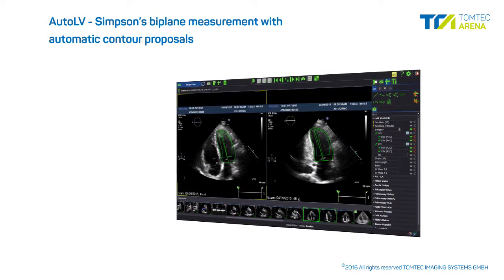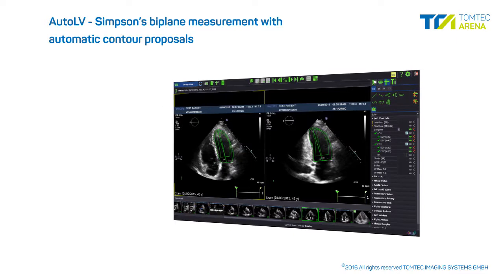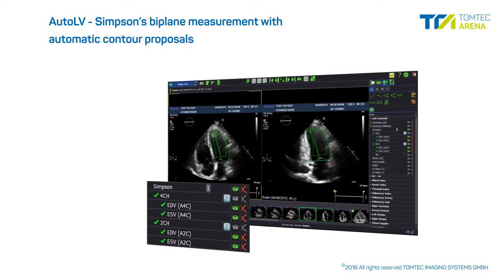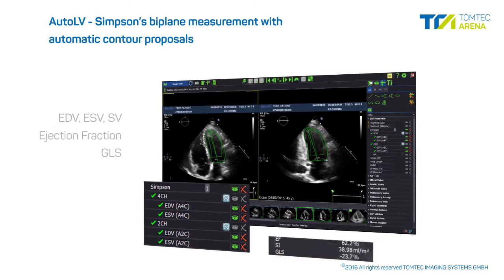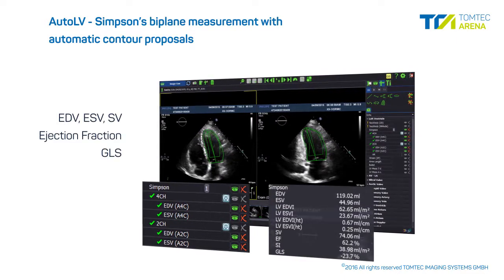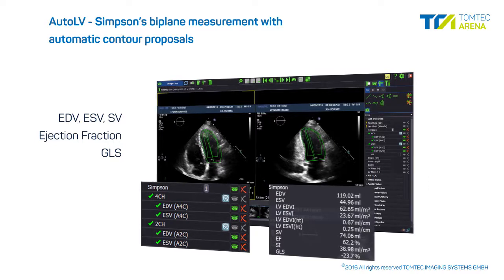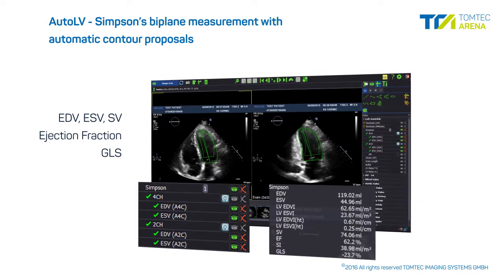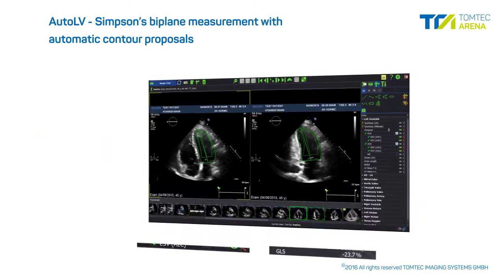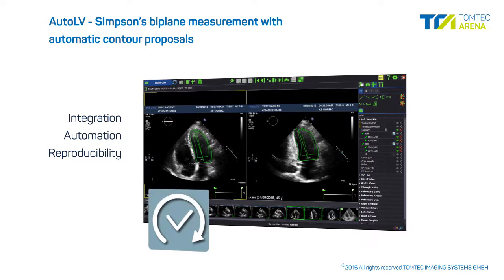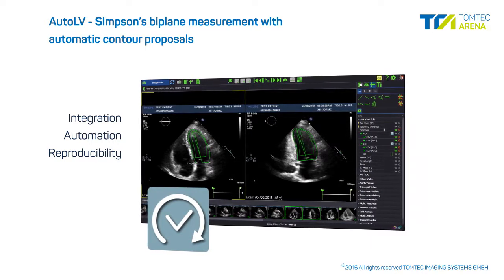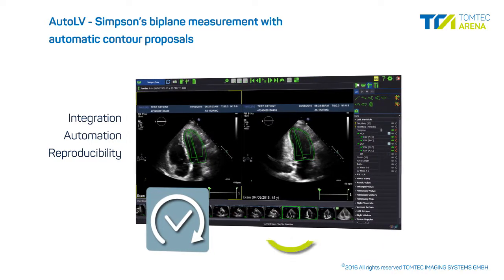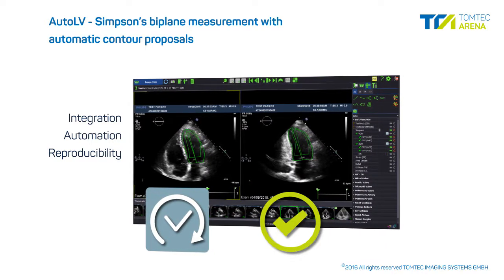The AutoLV module features an intuitive Simpsons biplane measurement with automatic contour proposals for volume, ejection fraction, and global longitudinal strain assessment. Seamless integration combined with automation allow for very rapid analyses and exceptional reproducibility.